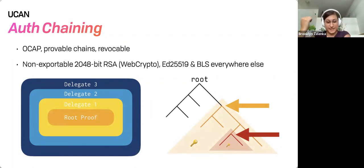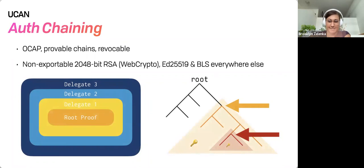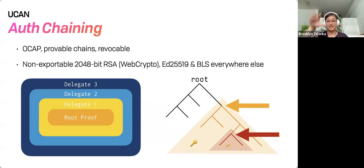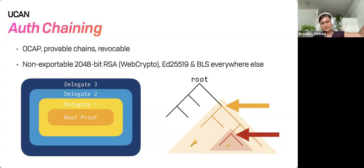Thinking about this in a hierarchical file system like the web native file system: the root user has access to the entire thing. If I grant access to the orange section, then they have access to everything in there. And then they can sub-delegate down to the red, but not these sibling nodes in black to the left.